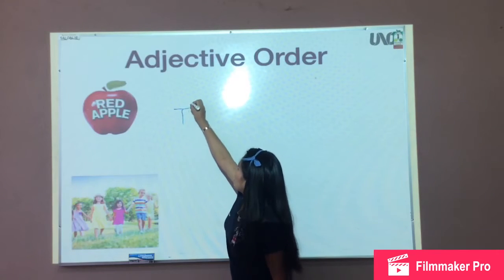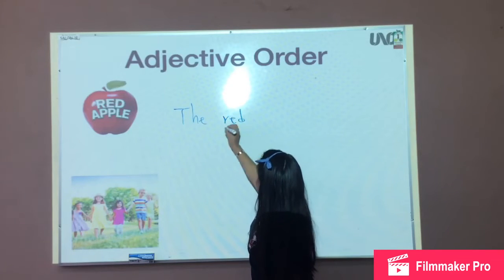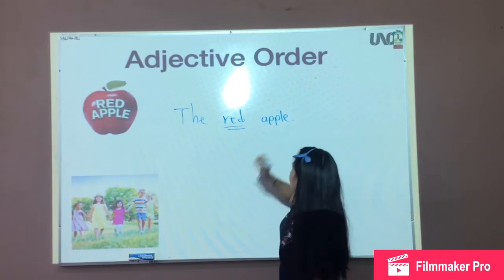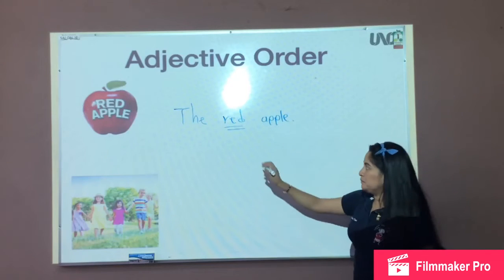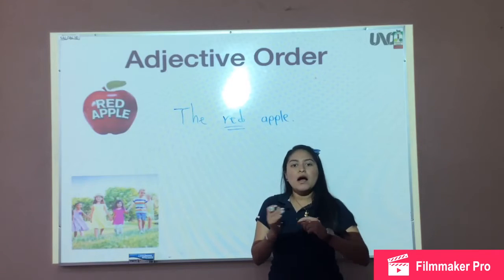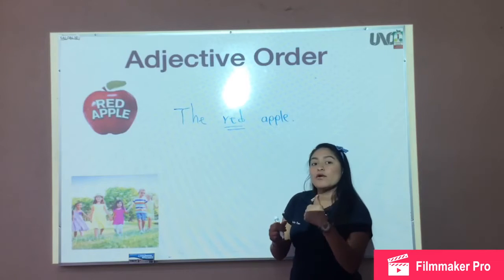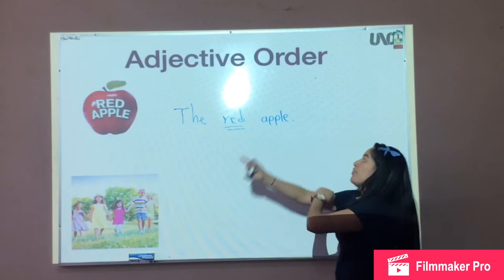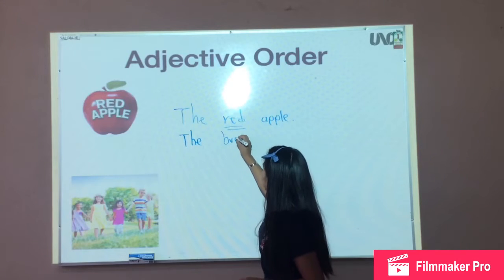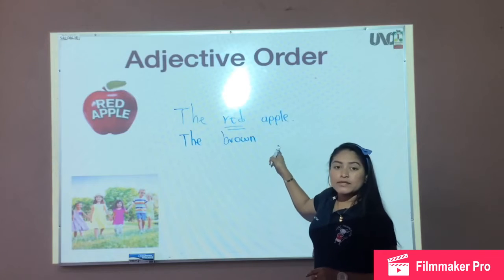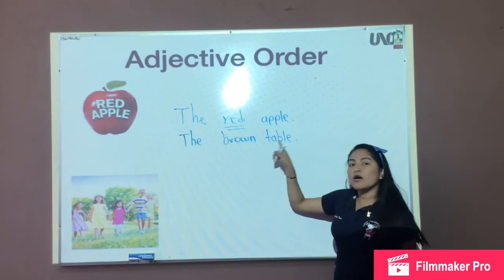For example, red — red is the color. We are going to write first red, and then the object. Or, mesa café — how do you say mesa café in English? We are going to say first the color and then the table. The brown table.